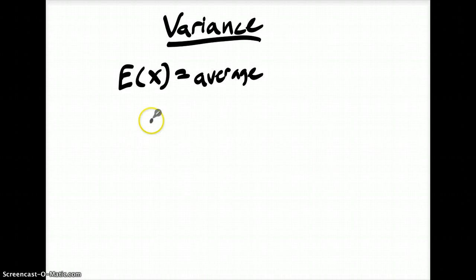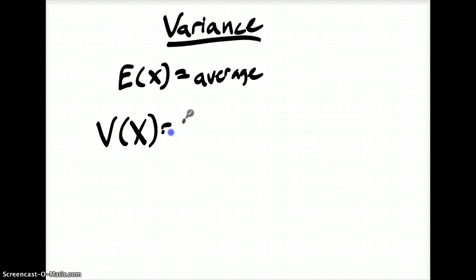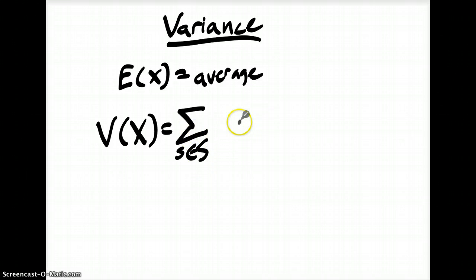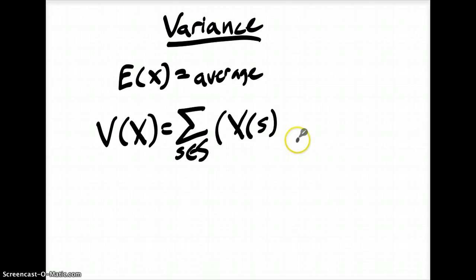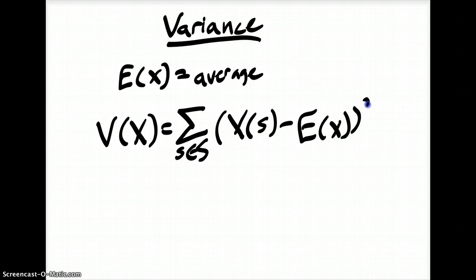We can calculate that with a seemingly complex but simplifiable equation. The variance, which is denoted V(X), is equal to the sum of all little s's in the sample space S — that is, all the elements of S — of the value of the random variable X(s), minus the expected value of X, squared, times the probability of s.